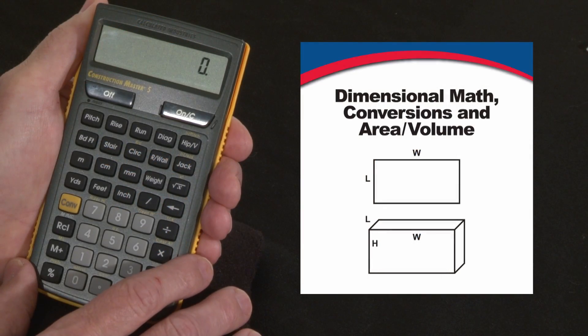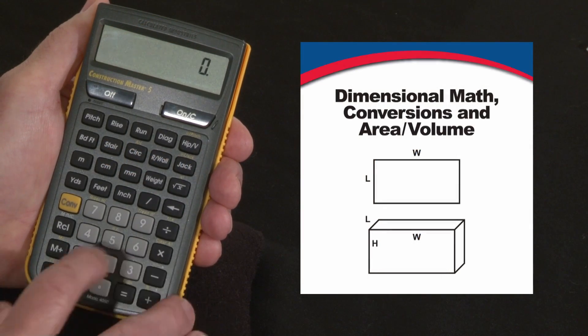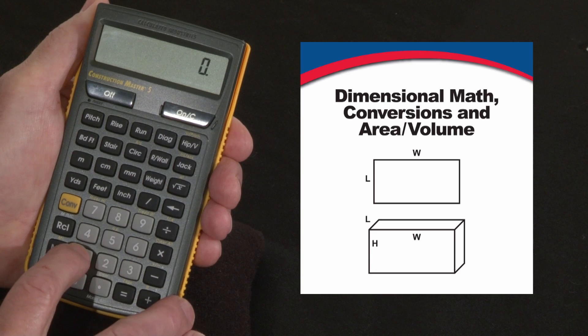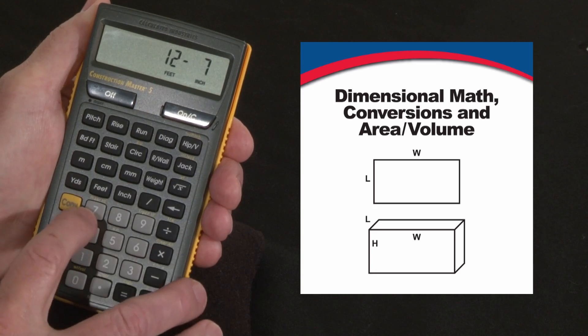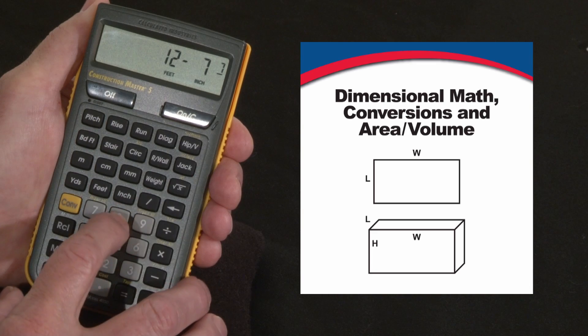Now let me show you how to do dimensional math and conversions on the Construction Master 5. You put in dimensions pretty much the way you say them. For instance, 12 feet—you just label the units. 7 inches and any fraction down to 64ths, 7/8ths.